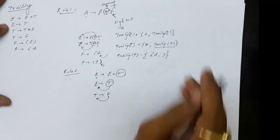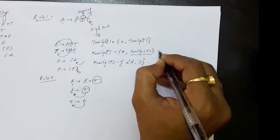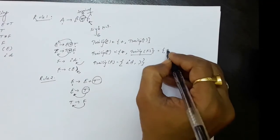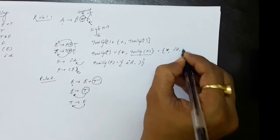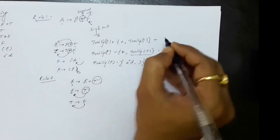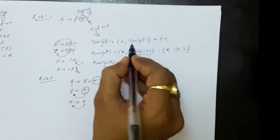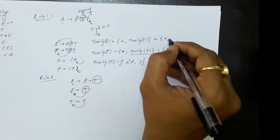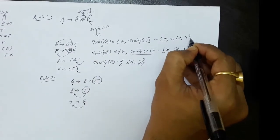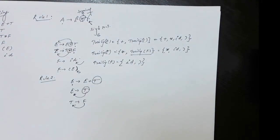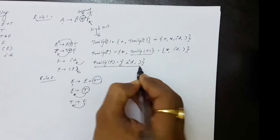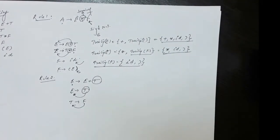TRAILING of F is {ID, )}. TRAILING of T will have multiplication, ID, and closing parenthesis. And TRAILING of E will include plus along with all of TRAILING of T: multiplication, ID, and closing parenthesis. In the next lecture, we will learn how to build the operator precedence parsing table having computed the trailing and leading items.